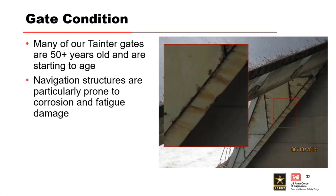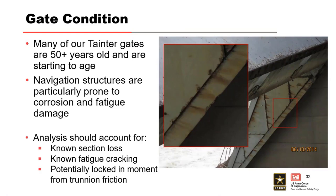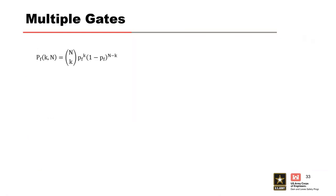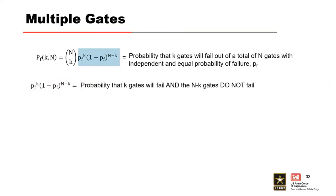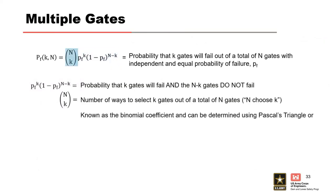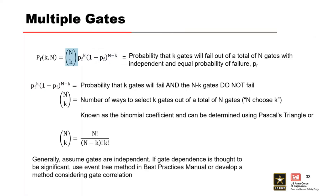This shows a case of pretty severe corrosion noted on a gate. For multiple gates, similar to piers, we consider multiple gate failures using Pascal's triangle, also referred to as the binomial theorem. The best practices chapter goes into detail on how to calculate this for however many piers or gates you have. Pascal's triangle assumes gate failures are independent. If gate dependence is thought to be significant, use the Ventry method in the best practices manual or develop a method considering gate correlation.